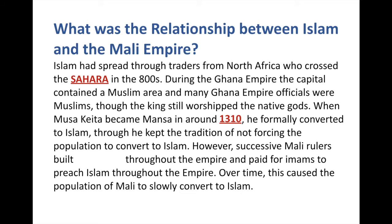What Musa Keita and successive Mali rulers did was build mosques — Muslim places of worship — throughout the empire, and they paid for imams, the Muslim teachers, the closest analog being like a pastor of a Christian church or a rabbi of a synagogue, to go around and preach Islam. Over time people slowly converted, partly thinking that if the Mansa is a Muslim, maybe following his religion might earn his favor.